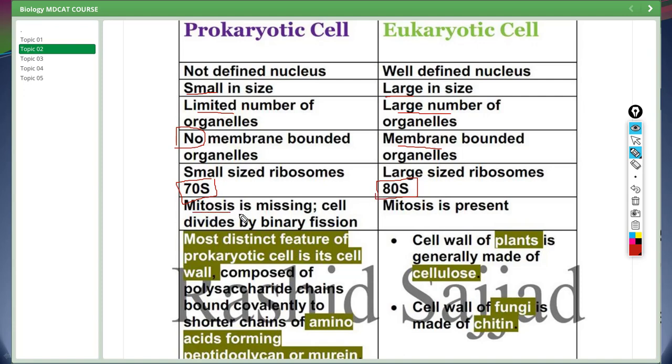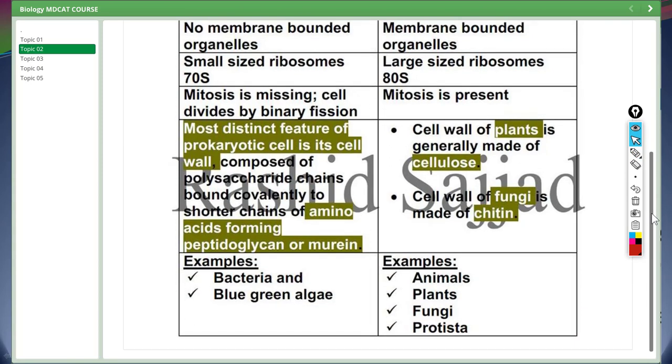Mitosis is absent in prokaryotes, and division takes place by binary fission in which the cells divide into two parts. Whereas in eukaryotic cells, mitosis takes place. Then we have an important feature which is the difference of cell wall. Prokaryotic cell has a cell wall composed of polysaccharide chains covalently linked to shorter chains of amino acid forming peptidoglycan or murein. Whereas cell wall of plants is generally made of cellulose. Cell wall of fungi is made of chitin. Bacteria and blue green algae are examples of prokaryotic cells. Animal, plants, fungi, protista are examples of eukaryotes.